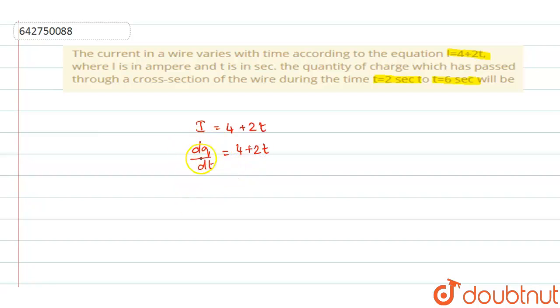We are supposed to find dq, the charge value, given this time interval 2 to 6. If you are given the time interval, we will write dq = (4 + 2t)dt.